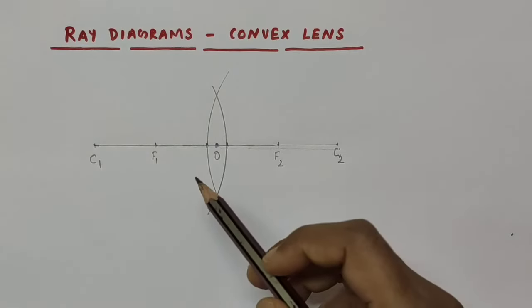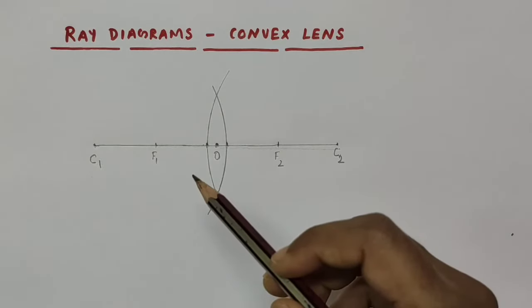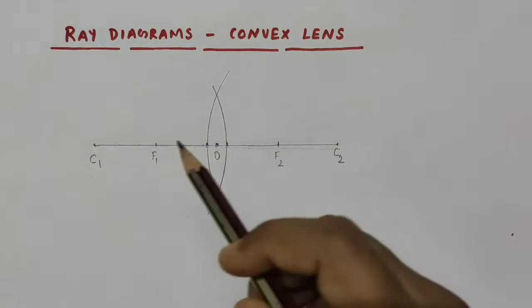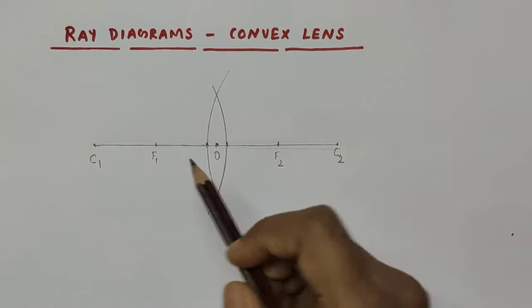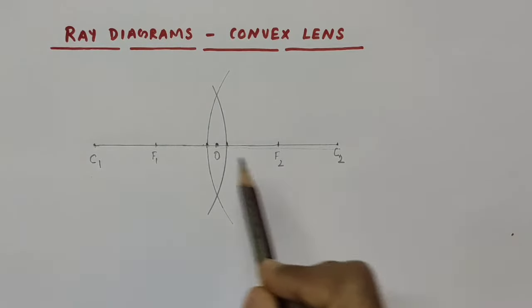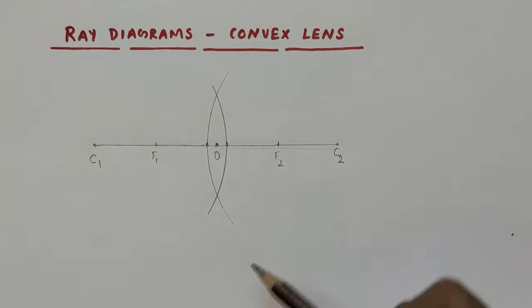So here our convex lens is ready — centers of curvature, principal foci, optical center — and this straight line is the principal axis of this convex lens.